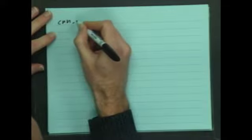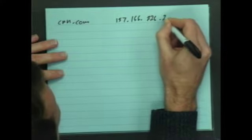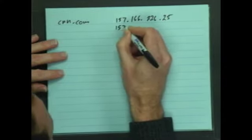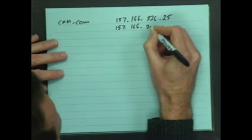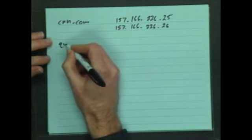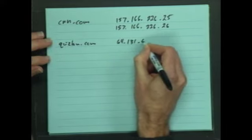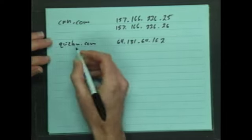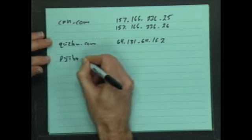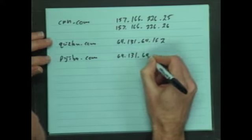You were assigned to look up the DNS entries for CNN.com, and if you did a name lookup for that, you should have gotten 157.166.226.25, and also 157.166.226.26. You were also supposed to look up QuizLaw.com. Their IP address would be 64.131.64.162, and also Pajiba.com. Their address was 64.131.64.162.